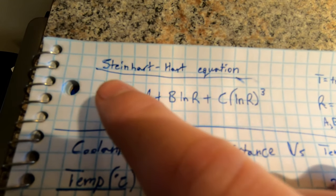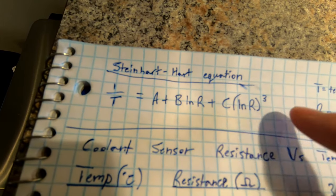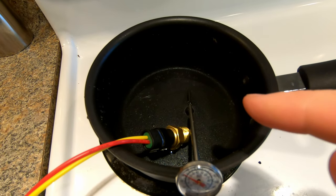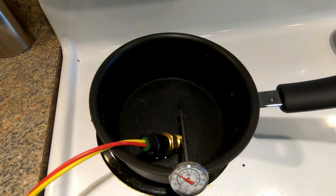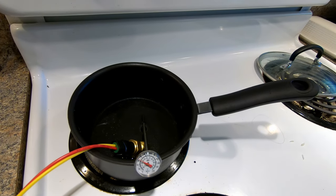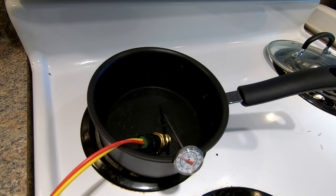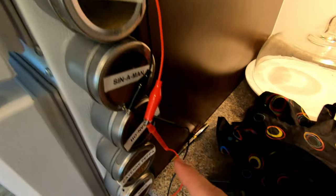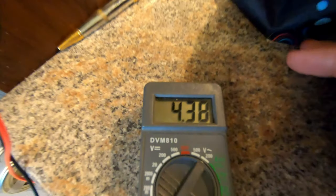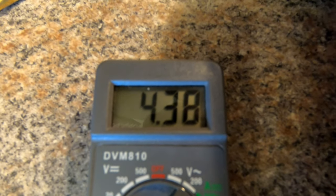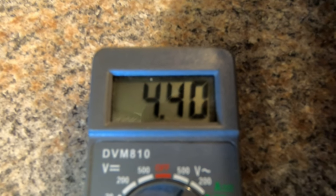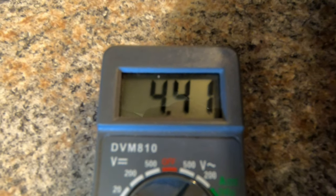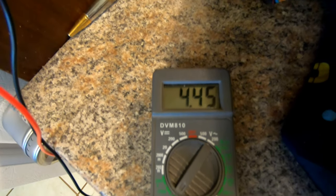I can input the resistance value coming off the sensor into the Arduino and solve for temperature, so at any resistance I can find what the temperature is on that sensor. I've put some water in this pot and I'm going to sit it in the freezer and let it get down to near freezing, then take the resistance and temperature readings. You can see as the temperature is going down the resistance is going up — right now it's at about 4,400 ohms and slowly rising.